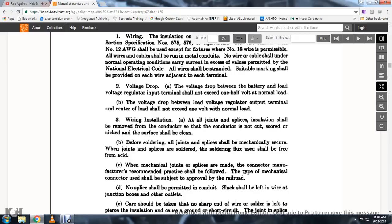Wiring Installation: On all joints and splices, installation shall be removed with the conductor as the conductor is not underscored but the surface shall be cleaned. Before soldering, all joints and splices must be mechanically secured. Soldered flux used shall be free of acid.